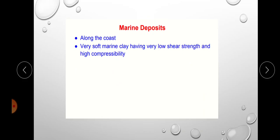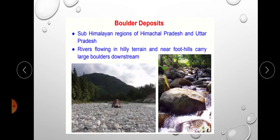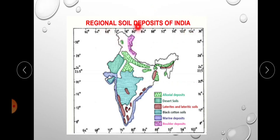Marine deposits are found along the coast and consist of very soft marine clay with very low shear strength and high compressibility. Boulder deposits are seen in the sub-Himalayan regions of Himachal Pradesh and Uttar Pradesh, where rivers flowing in hilly terrain carry larger boulders downstream. A map of India shows black cotton soil in the middle portion, alluvial and desert soil in the north, laterite in the southern/Kerala region, marine deposits along the coast, and boulder deposits in the Himalayan area.